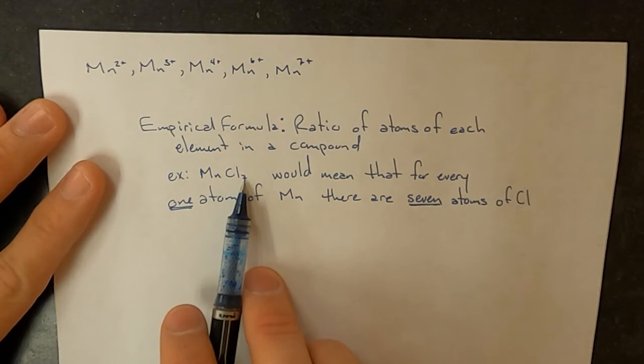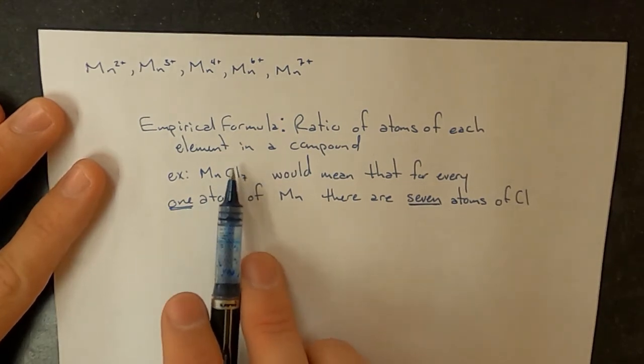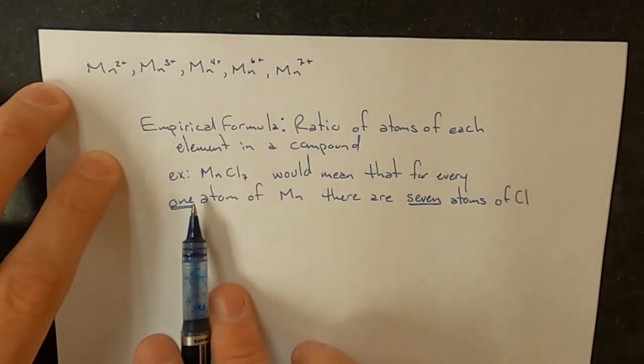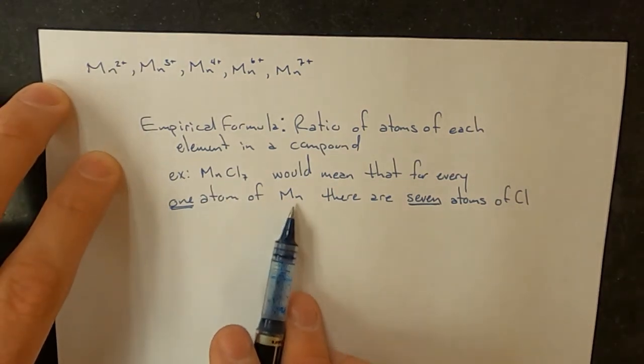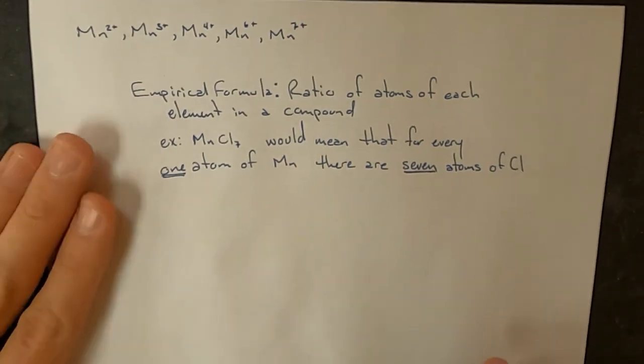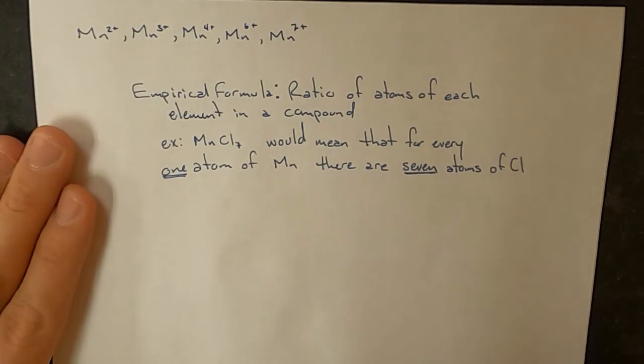The subscript that comes after an element tells how many atoms there are in that substance. With no subscript, it's implied that there is just one atom of that element. Now again, atoms are so small that we are not going to be able to count how many atoms of manganese and atoms of chlorine there are.